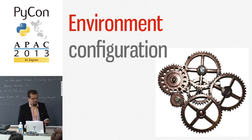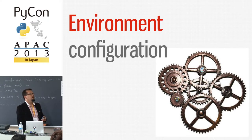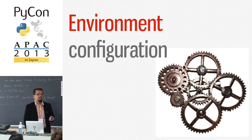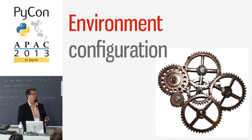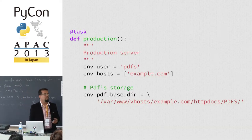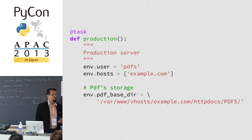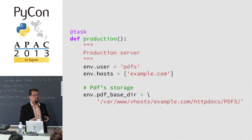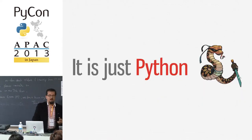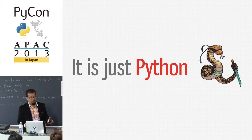They asked us to upload the gift cards to the server and provide users with a download link at a random URL, because we didn't want users to guess the URL and get someone else's gift card. We took advantage of Fabric's environment configuration — it was very easy to run the task as a specific user on the server and configure globally where the final gift card PDF would be located. By changing env.host, I could run it locally on a development server before running it in production, without mucking around with error-prone command line options.